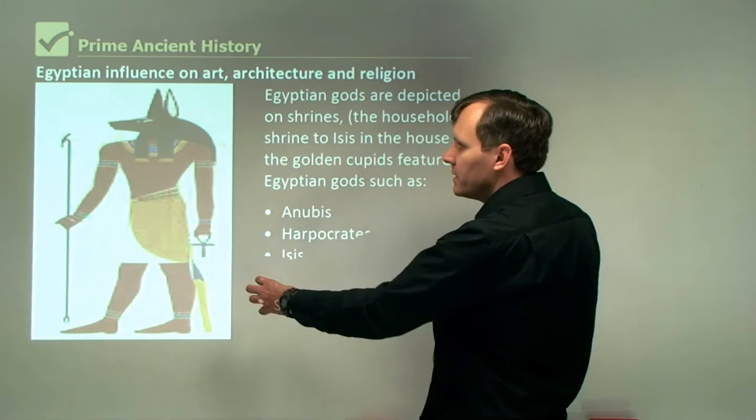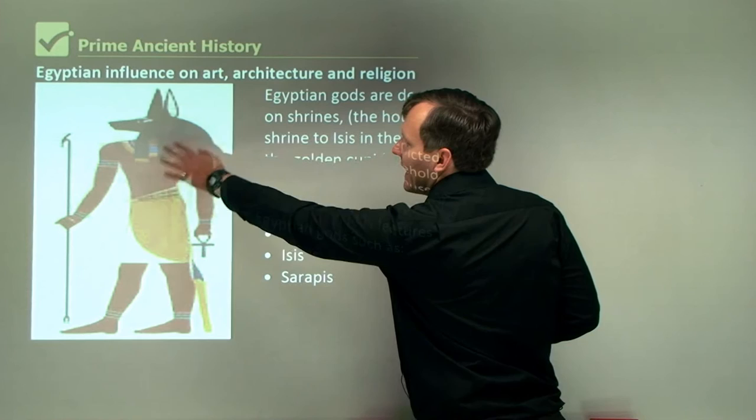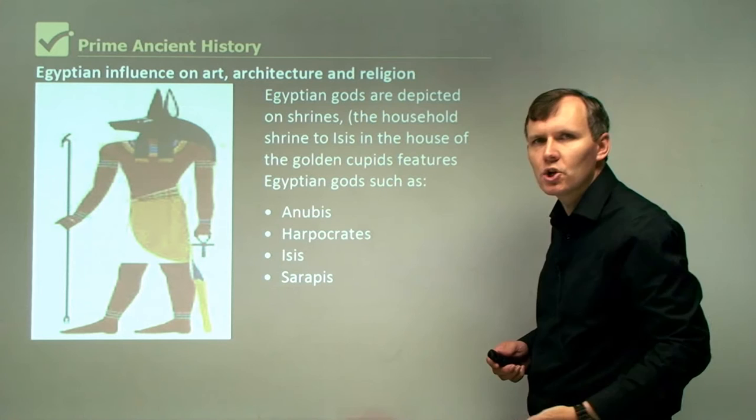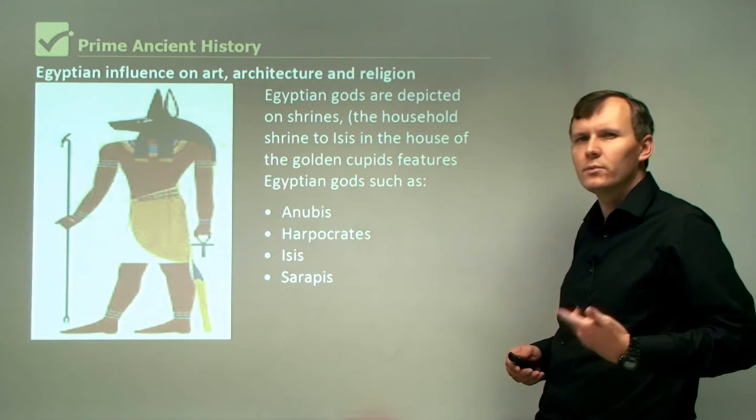In Egypt, the gods tended to be a mixture of human and animal. You can see the head of an animal and the body of a human — that's the way a lot of the Egyptian gods were. But Isis was different; Isis was just a female and didn't have the head of an animal. You can also see that Anubis is holding the ankh, which is a symbol of eternal life.